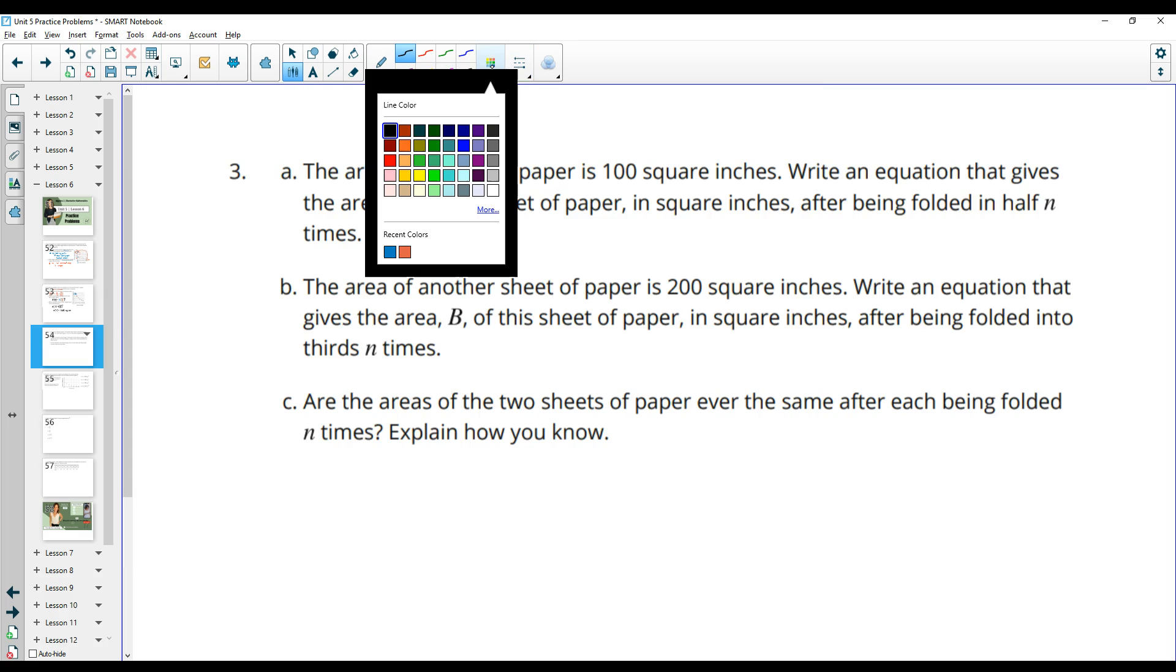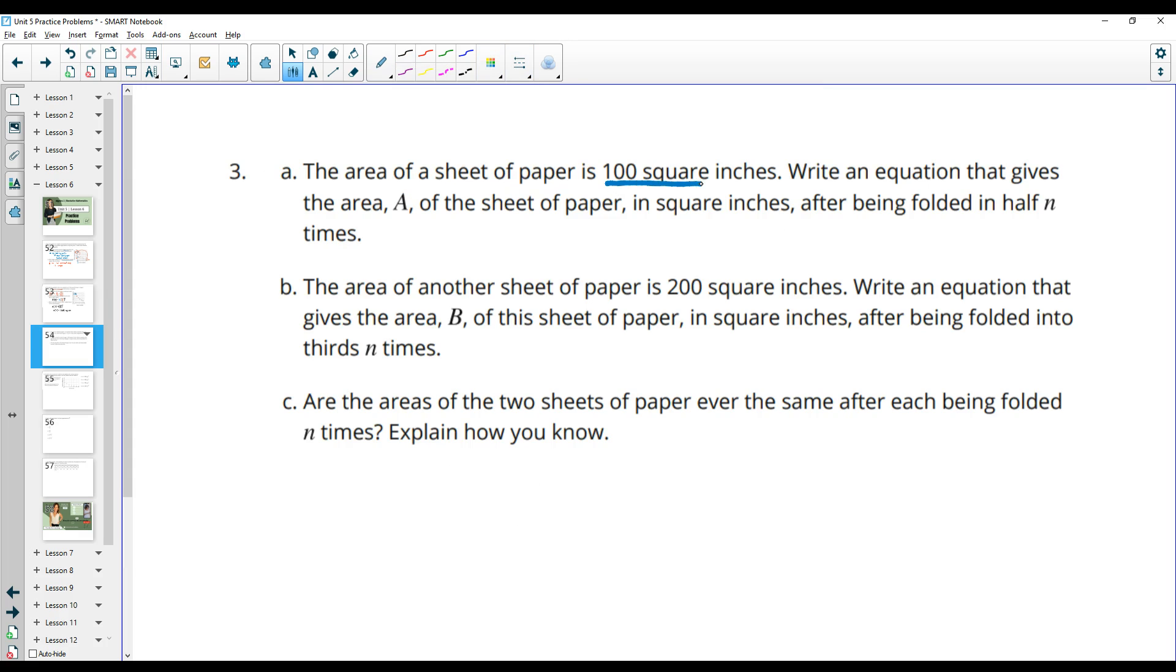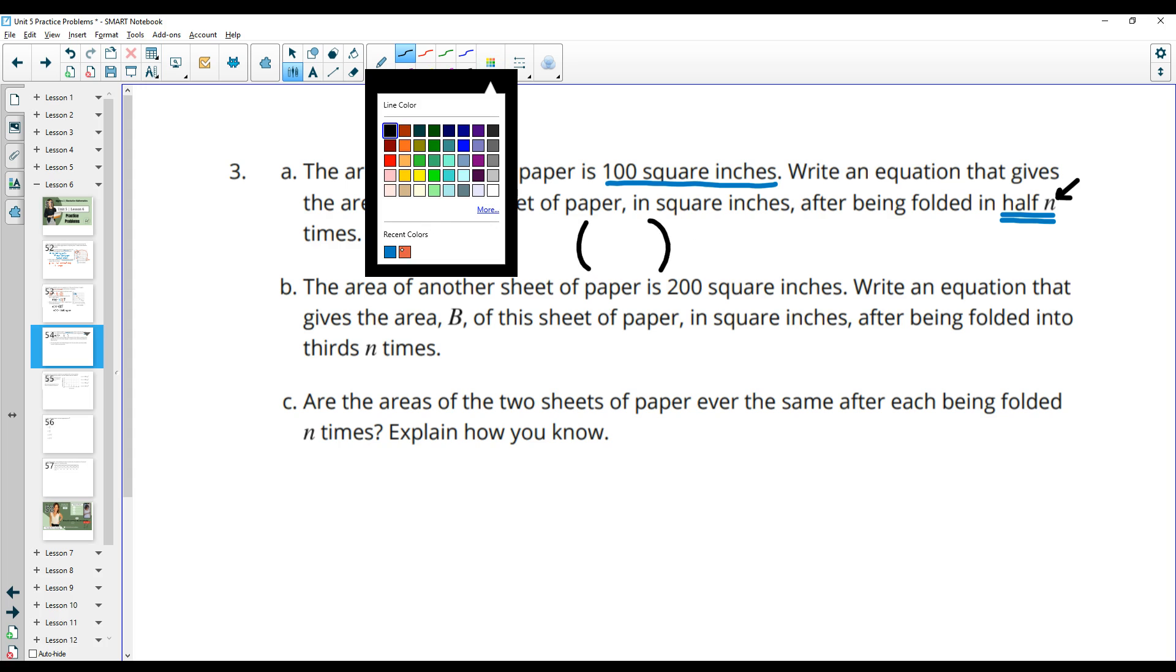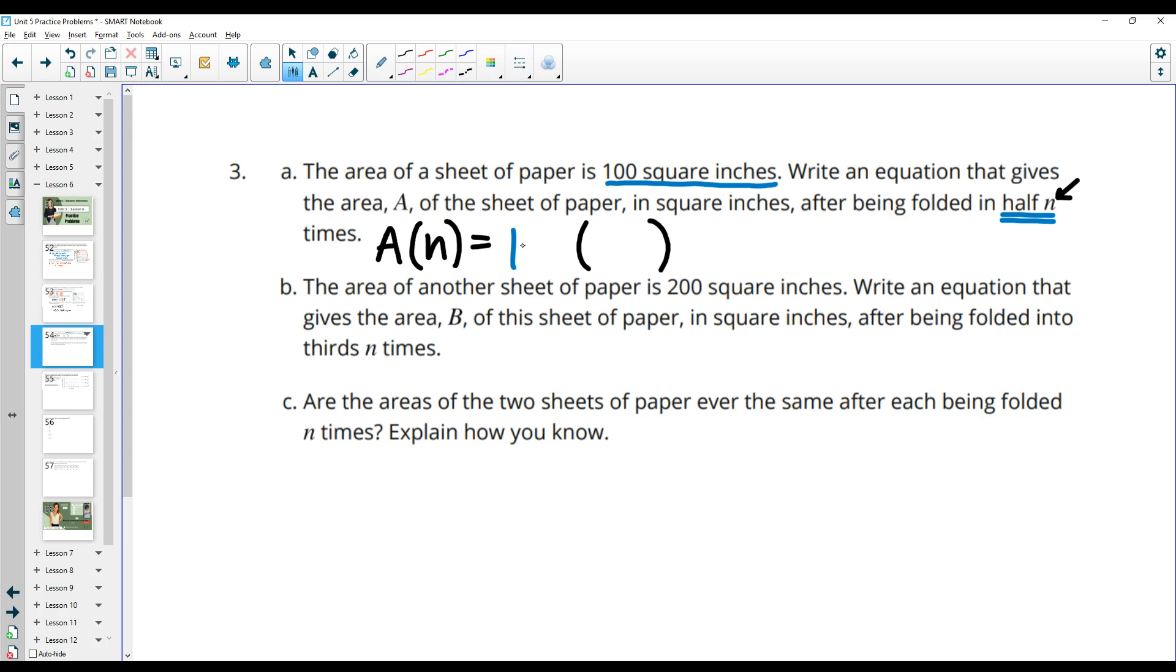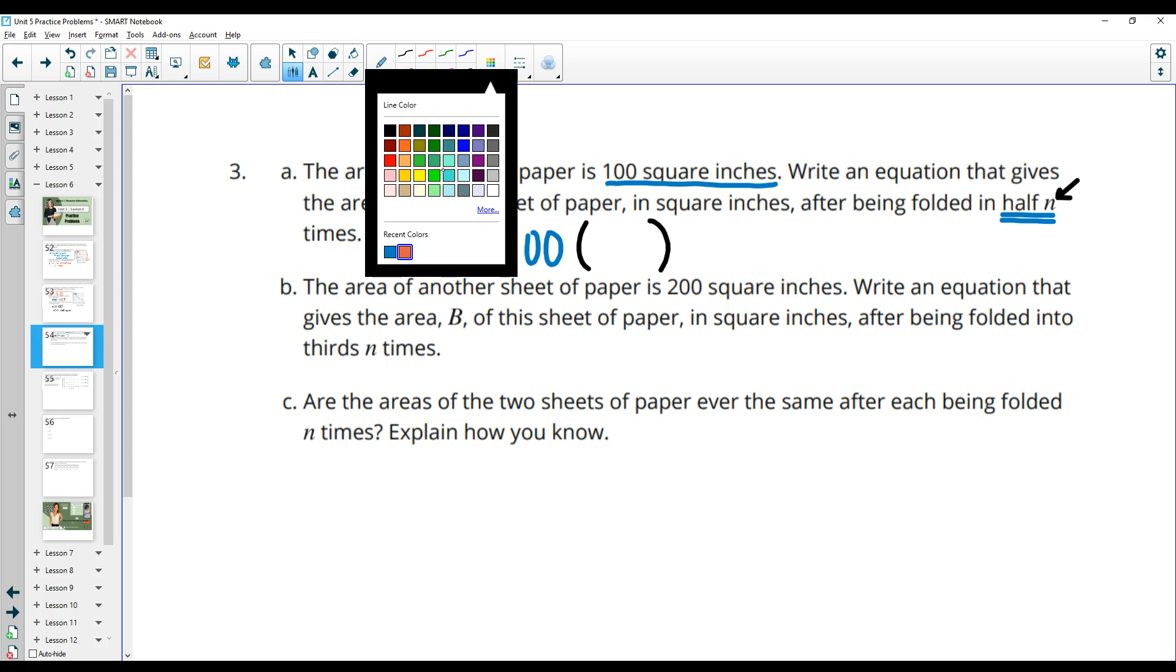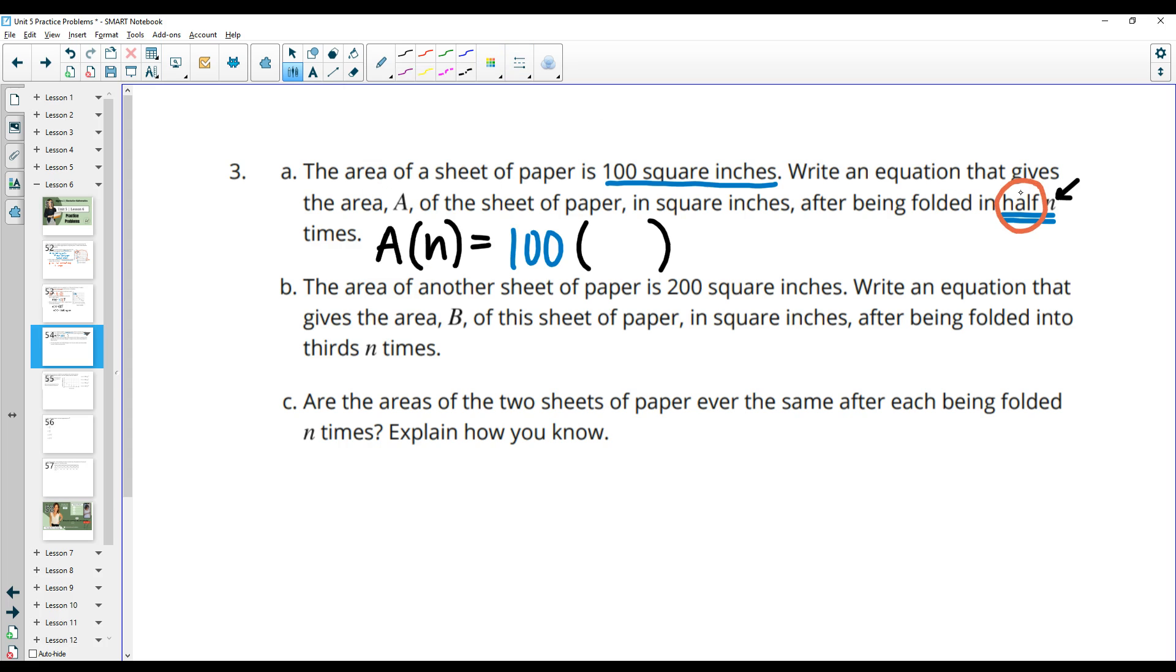Number three, the area of a sheet of paper is 100 square inches. Write an equation that gives the area of the sheet of paper in square inches after being folded in half n times. So here we have A of n. So I want our function to be capital A. They're folding it n times. So A of n is the function. We'll have an initial value times the rate of increase or decrease. So in this case, our initial value is 100. And then our paper is being folded in half. So half is one half as a fraction, right? And then to the n power for the number of folds.